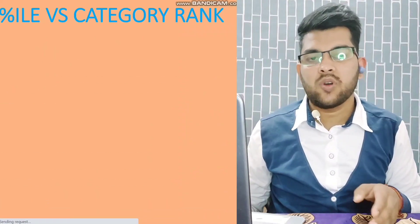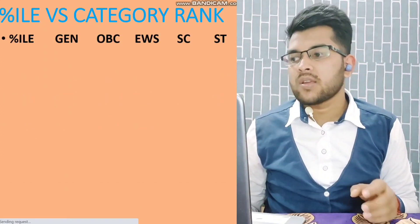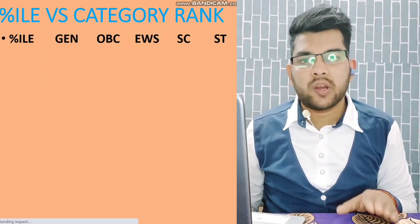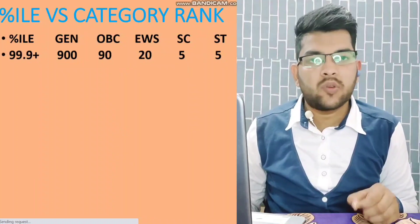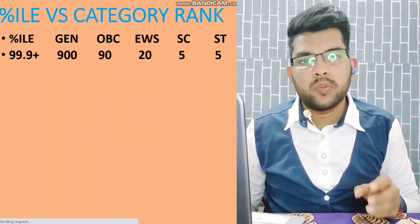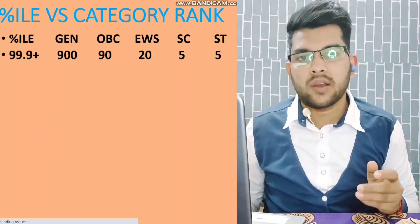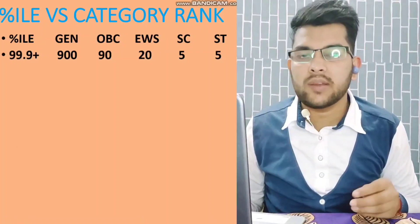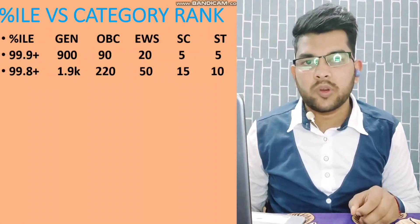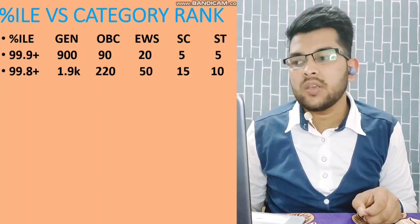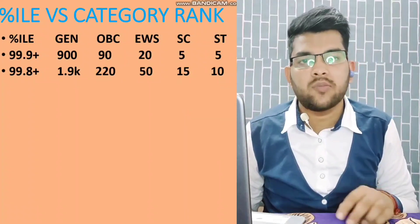Here is the percentile versus category rank for every category. First, for 99.9+ percentile: your General rank will be under 900, OBC rank under 90, EWS under 20, and SC/ST rank under 5 for sure. For 99.8+ percentile: General rank under 1,900, OBC rank 220 or less, EWS under 50, SC under 15, and ST under 10 — 100% sure.